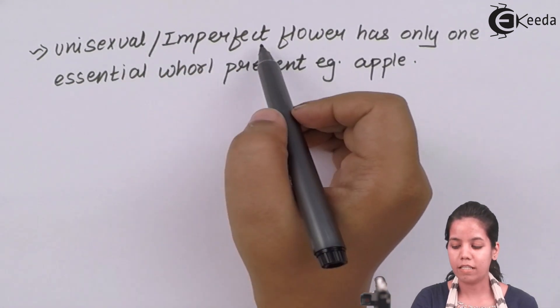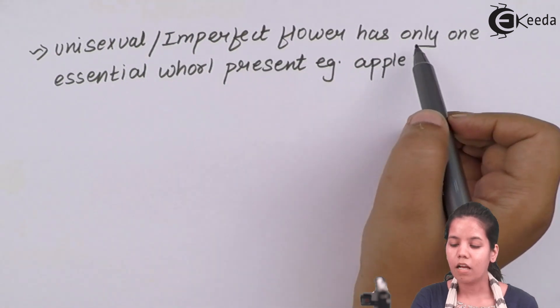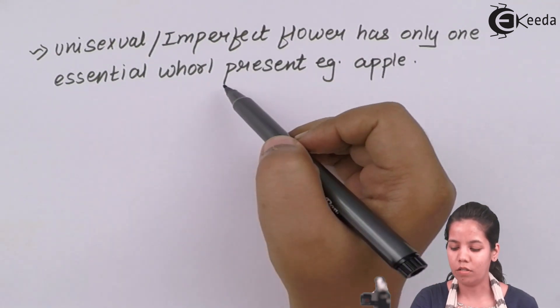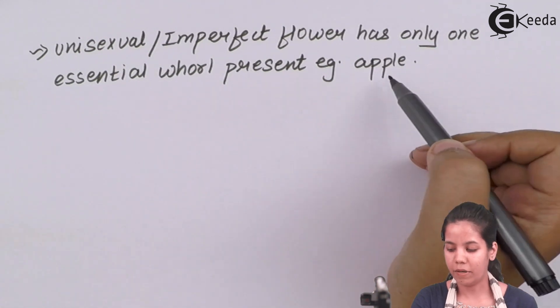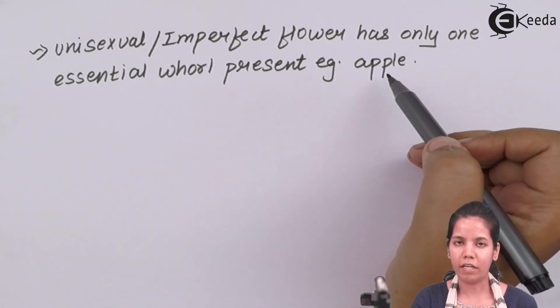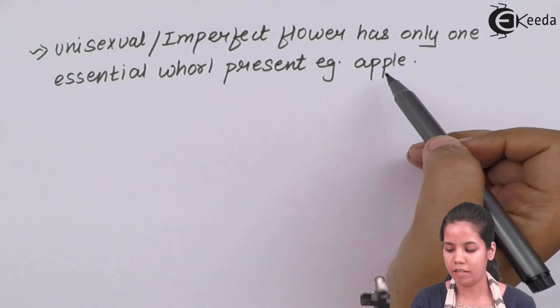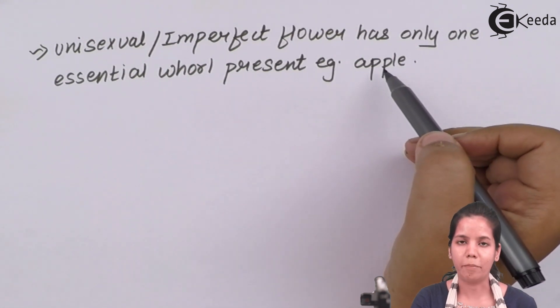Unisexual flower or imperfect flower has any one of the essential whorls present. Majority times essential whorls either androecium or gynoecium, one of them would be absent in the plant. Example is apple.